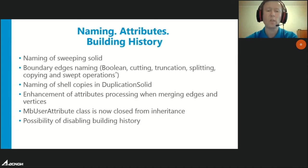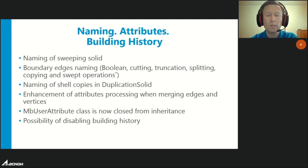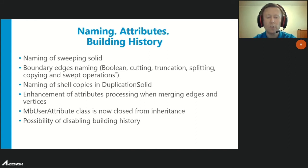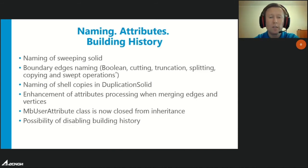You can use callback functions when processing merges, splits, and attribute modifications if you attach custom attributes to body elements. The ability to inherit from the system user attribute MpUserAttribute is now closed, to avoid confusing it with the base class MpExternalAttribute. The ability to disable generating the building history of shells and frameworks has been added at user request, though building history is essential for debugging — without it, we won't be able to help you with problems, so don't disable it completely.